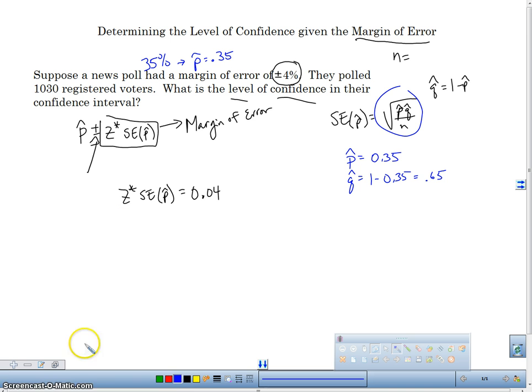So we've got z star. Now we're going to divide this all over. So we're going to have 0.04 divided by the square root of 0.35 times 0.65 divided by n. And n was 1,030. Just make a note of that. That's n right there. The number in our sample size.